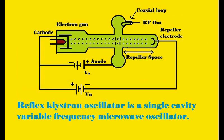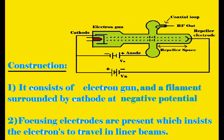Reflex klystron oscillator is a single-cavity variable-frequency microwave oscillator, whereas klystron amplifiers are multi-cavity devices — they have more than one cavity for microwave oscillations. Let us see the constructional features of the reflex klystron oscillator.